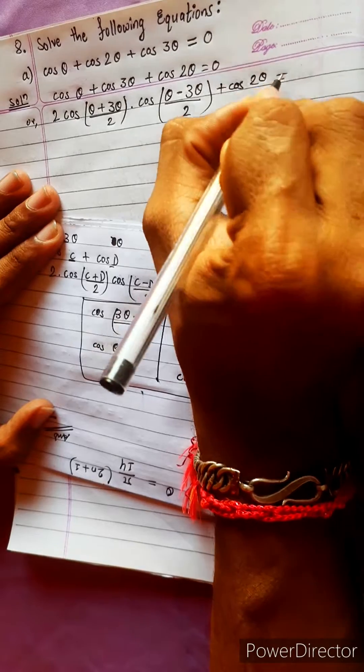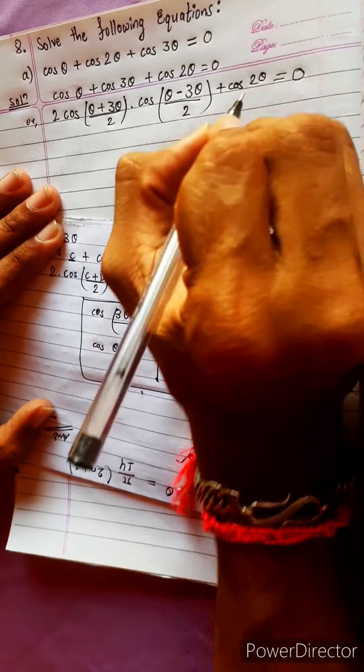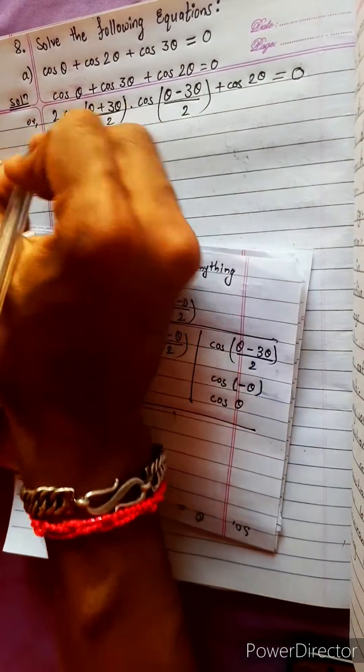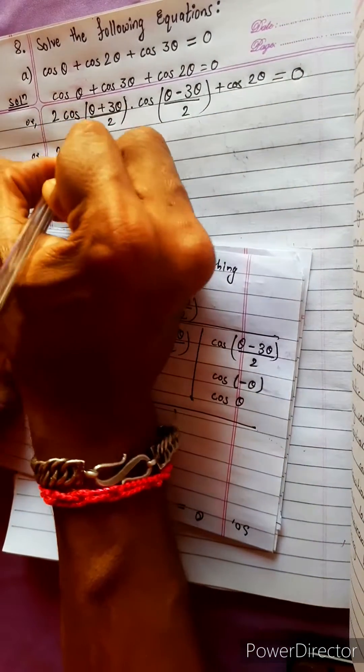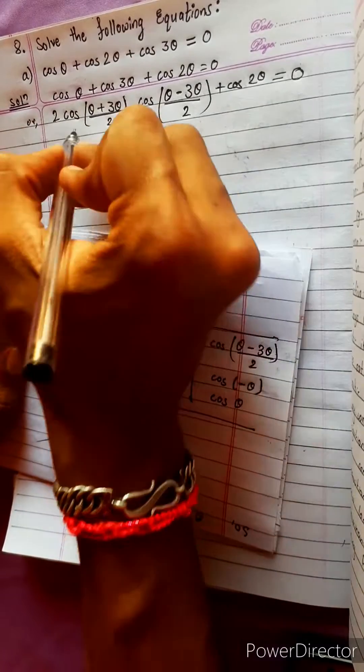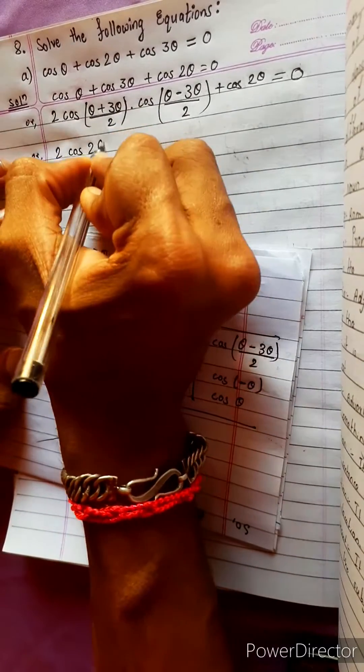Applying the formula to cos θ and cos 3θ, we get 2 cos((3θ+θ)/2) cos((3θ-θ)/2), which gives 2 cos 2θ cos θ. The remaining term is cos 2θ.